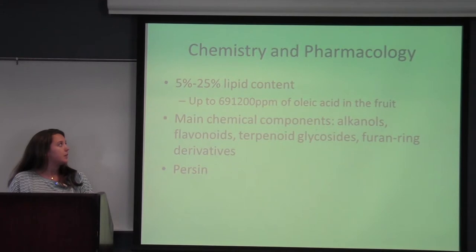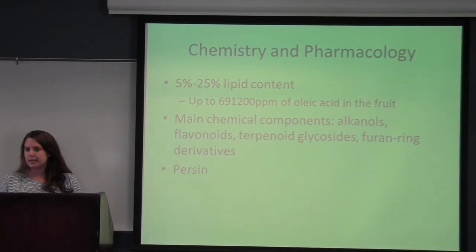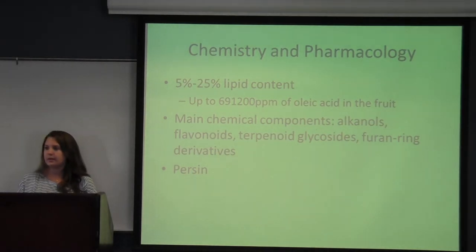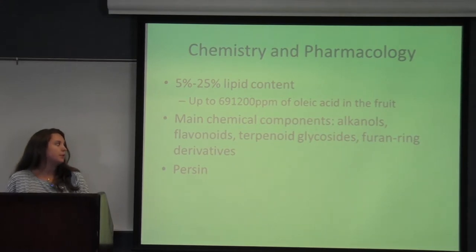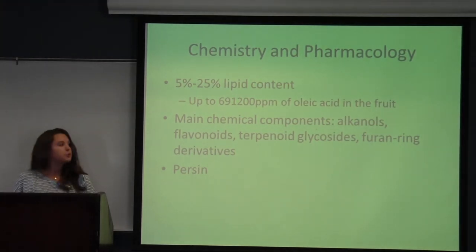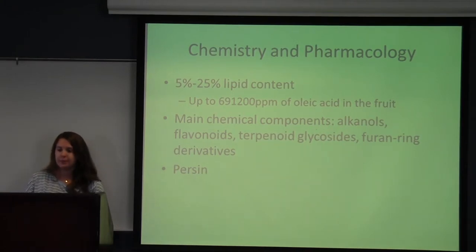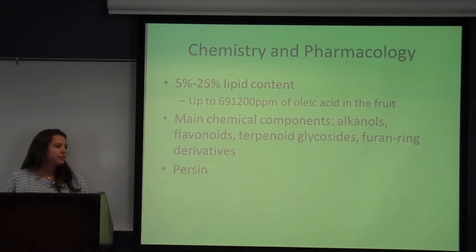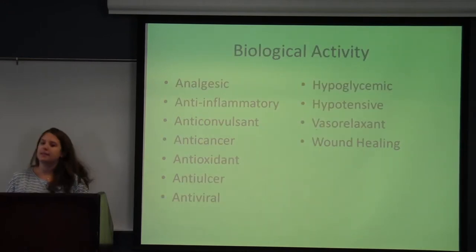The chemistry and pharmacology of avocado includes up to 25% lipid content, and the main fat component in the fruit is oleic acid with almost 700,000 parts per million. This clear colorless oil is also found in many other plants and animal fats. Some of the main chemical components other than fat are alkanols, flavonoids, terpenoid glycosides, and furanyl derivatives. One alkanol that is particularly interesting is persin, which is a toxin found in the leaves, and it produces negative effects in lactating mammals, which inspired some in vitro studies of that compound.